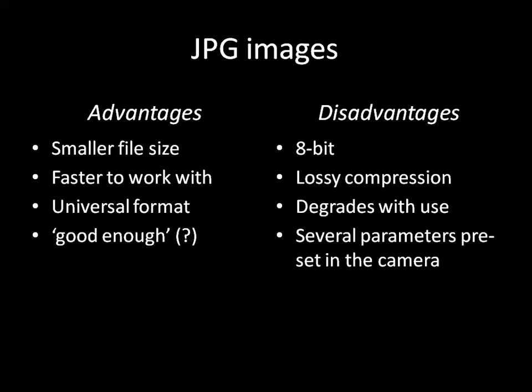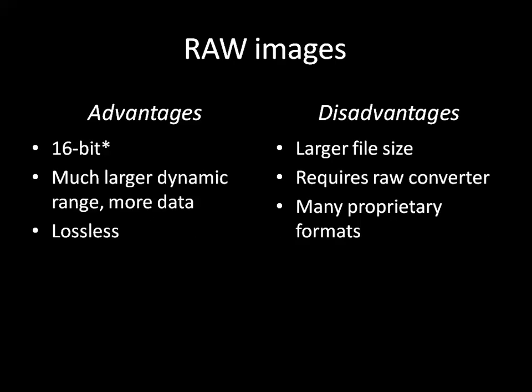Another disadvantage of JPEG is that several parameters of the image are preset in the camera, and that may or may not be what you're looking for. RAW files represent, as much as possible, all of the image data captured by the camera. RAW files must be processed in order to create something that looks like a photograph. The advantages of RAW are that they're 16-bit — though no camera today creates a true 16-bit image file; there are 12-bit and 14-bit images. RAW files also have a much larger dynamic range and capture much more data.